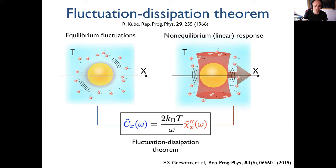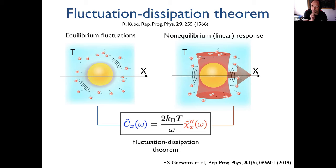So when this is the fluctuation-dissipation relation — when you have a system, for example a colloid in equilibrium, and you weakly perturb it, for example by applying a sinusoidal weak force on the colloid, the response under this weak perturbation and the fluctuations without the perturbation are related by this quantity. As I showed, you can also read about this in the review I put at the bottom.